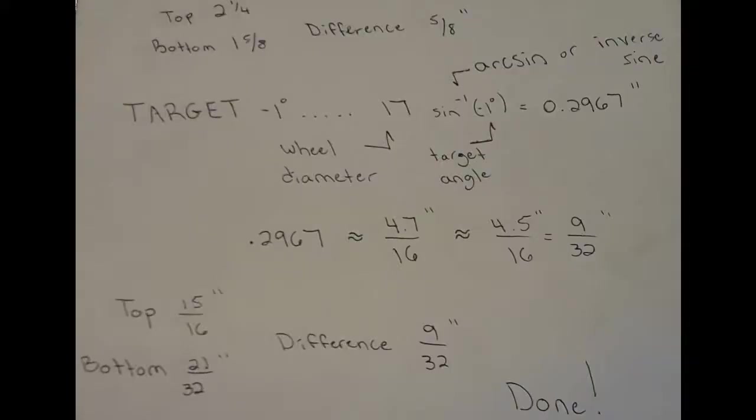Here are my measurements. You can see I got 1 5/8 inch on the bottom and 2 1/4 inch on the top for a difference of 5/8 of an inch. Now we don't usually measure camber in inches, we usually measure it in degrees, and my target here is negative one degree at least in the rear, and we're going to use the following function to figure out what that would correspond to in inches.